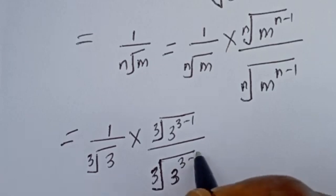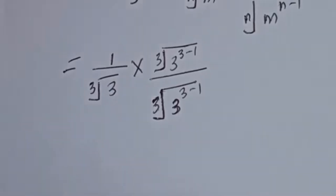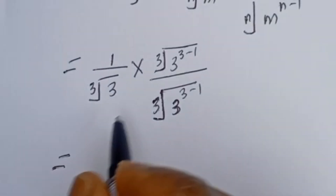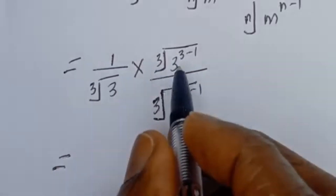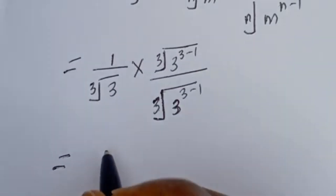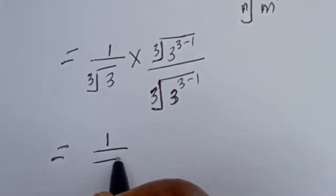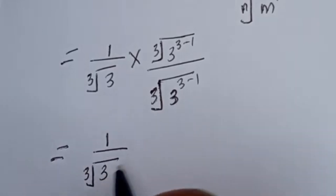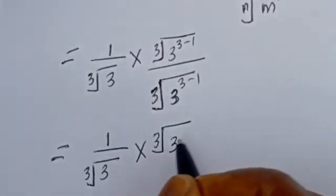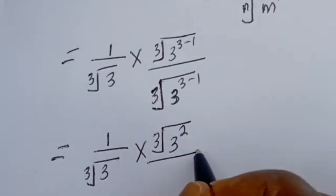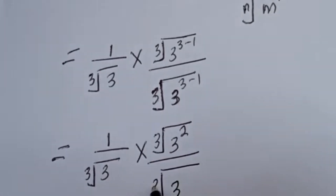This is equal to — if you multiply out 1 by the cube root of 3 to the power of 3 minus 1 — so this is equal to 1 divided by the cube root of 3 times the cube root of 3 to the power of 2.